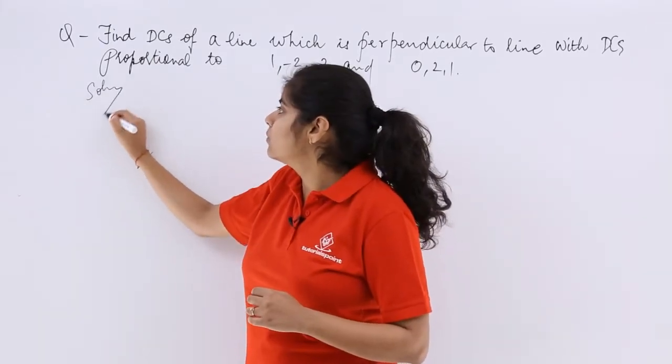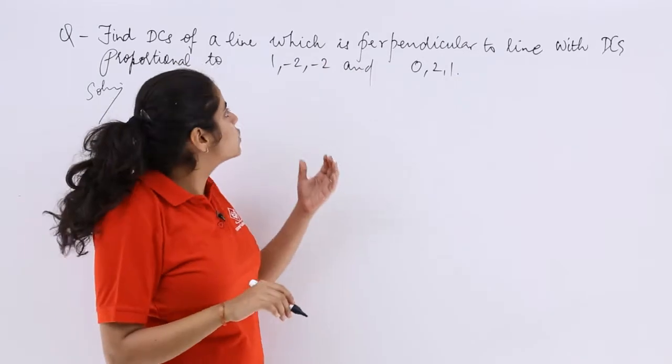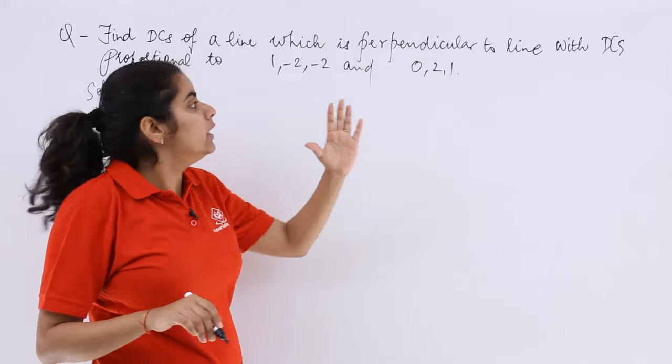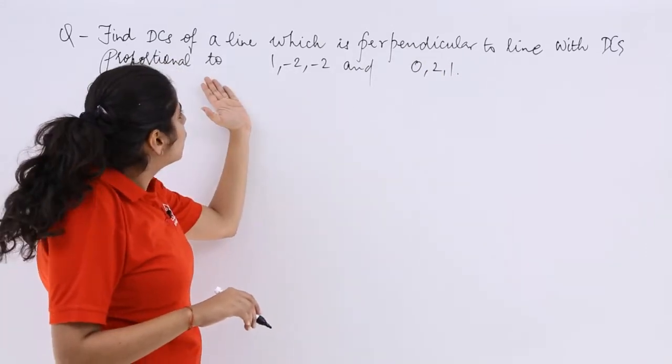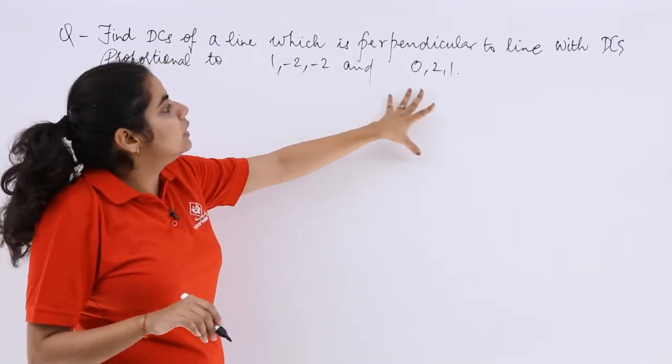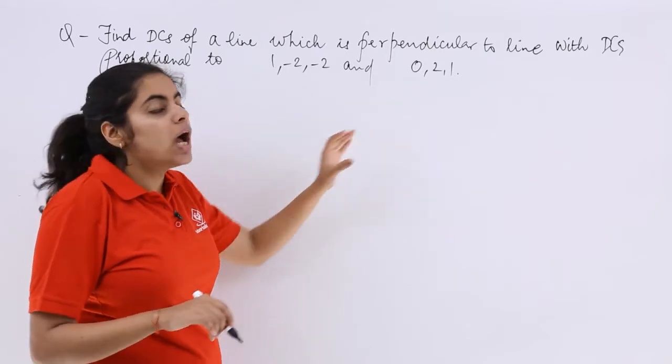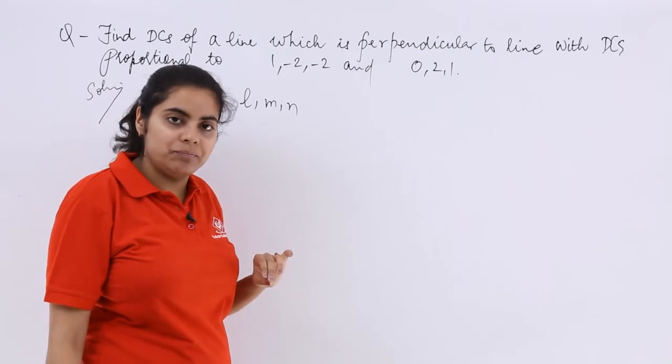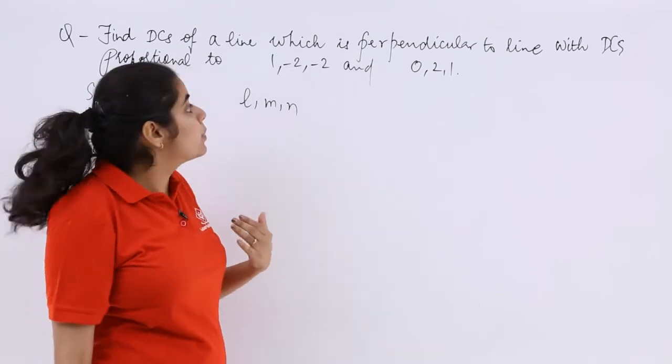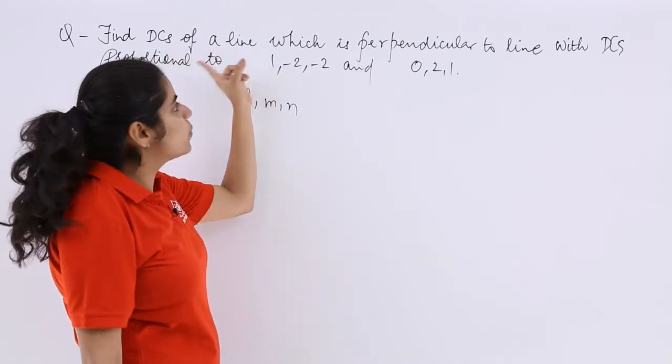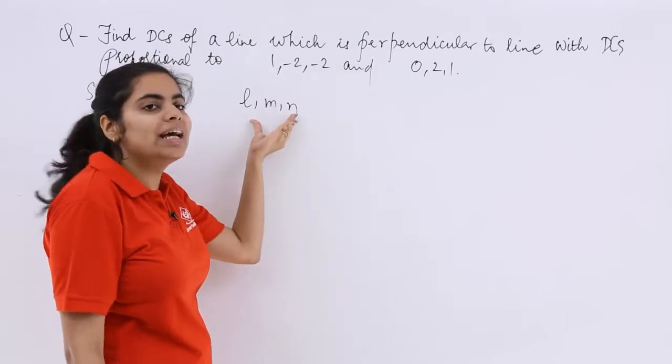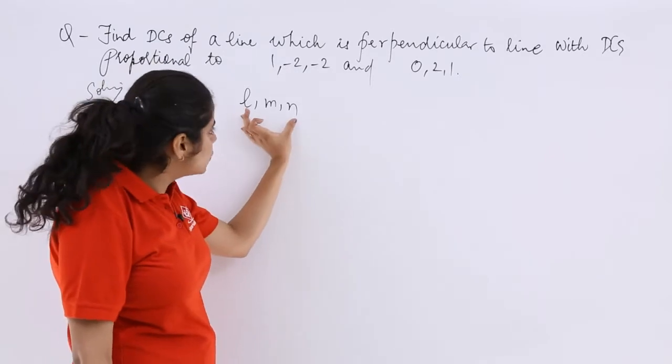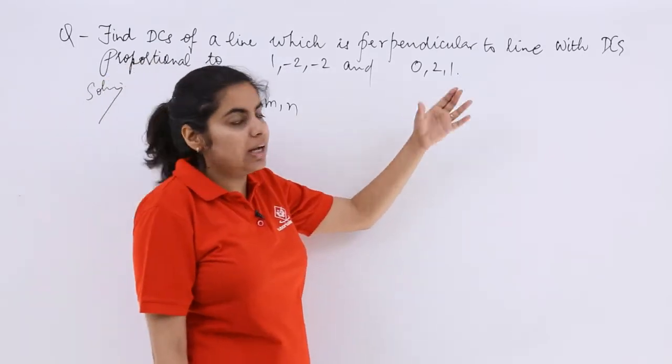So I write here solution. Find the direction cosines of a line which is perpendicular to a line with these direction cosines. So let the direction cosines of the required line be L, M, N. I can assume so because ultimately I have to find the direction cosines of a line. So for that line, I am assuming the direction cosines to be L, M, N.